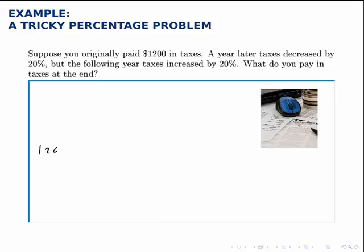At the beginning, you pay $1,200 in taxes. After a year, that drops by 20%. So if it dropped by 20%, what's left is 80% of the 1,200. So we find 80% or 0.8 of 1,200.